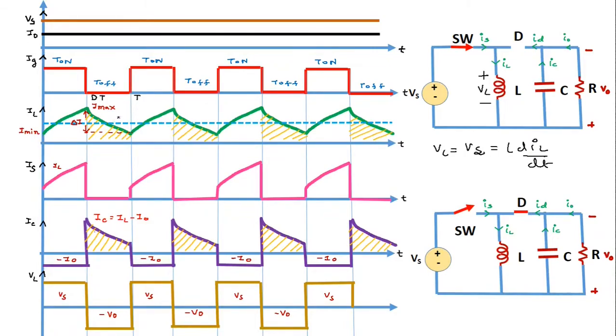During the ON period of the switch, the current through the inductor increases from minimum to maximum value. We take a finite minimum value because we are considering steady state. The switch current equals the inductor current during the ON period, so the waveform of the inductor current is also the waveform of the switch current.